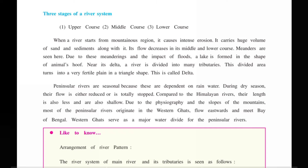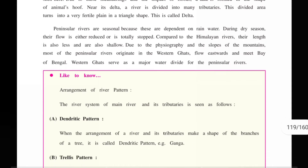In the middle and lower course, meanders are seen — zigzag, wavy lines forming a meandering shape. Due to meandering and flood impacts, a lake is formed in the shape of an animal hoof, called an oxbow lake. Near the mouth, the river is divided into many tributaries. This divided area turns into very fertile plains in a triangular shape, which is called a delta.